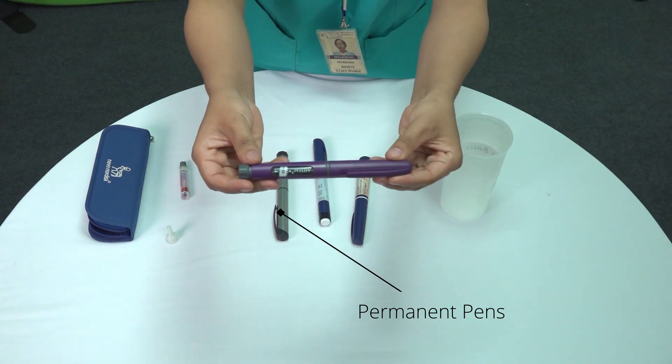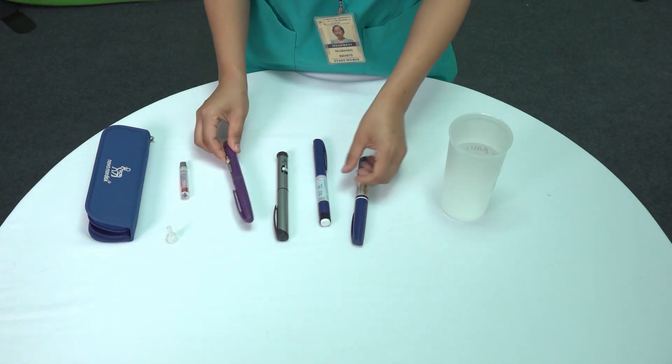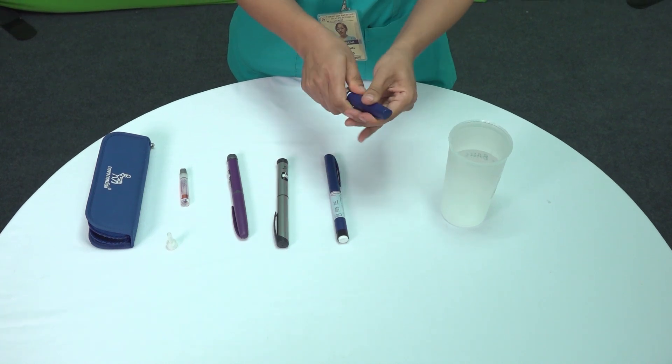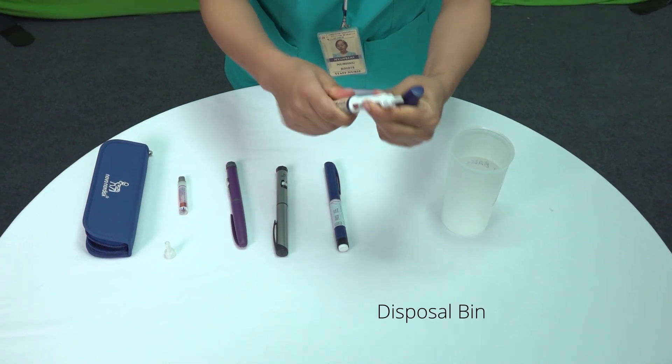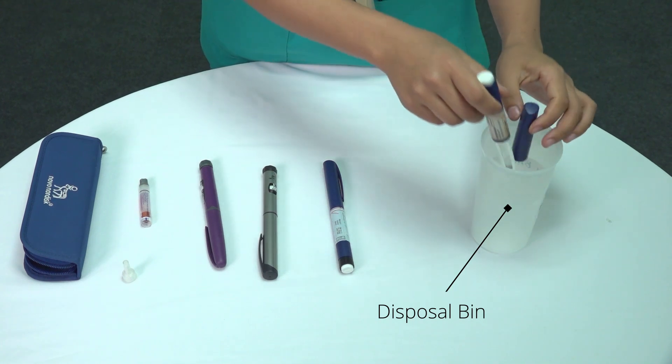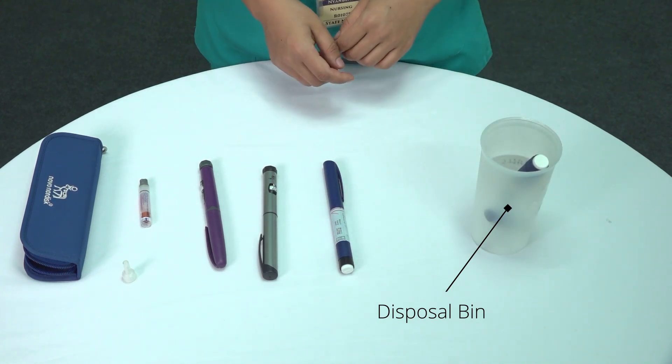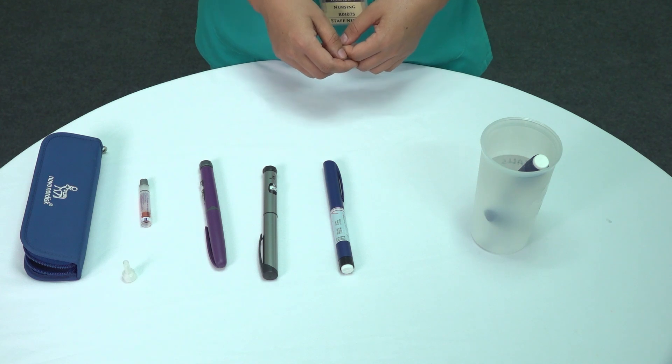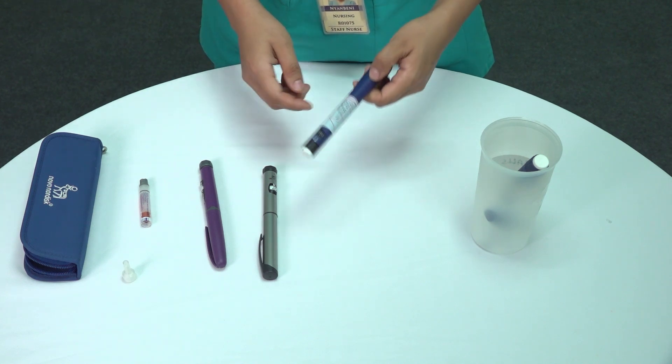Let's start by explaining each one. First up, temporary pens. These are disposable pens, which means the insulin cartridge cannot be replaced. Once the insulin runs out, the entire pen is discarded. A great example of a temporary pen is the FlexPen.